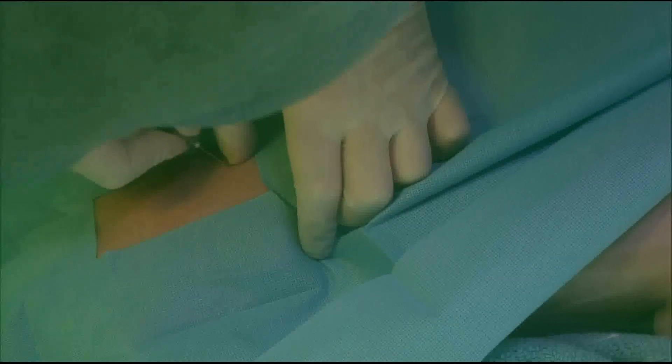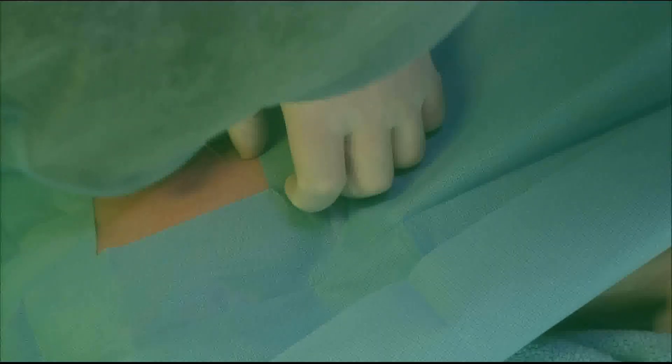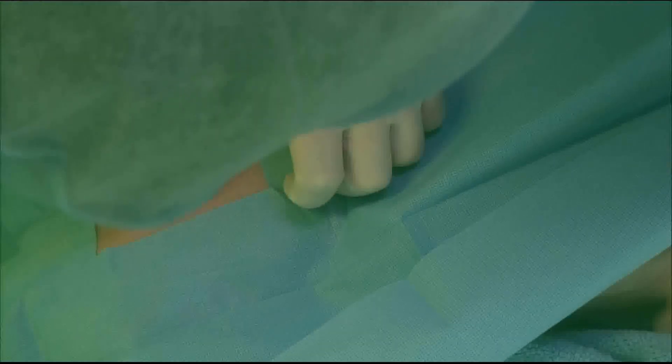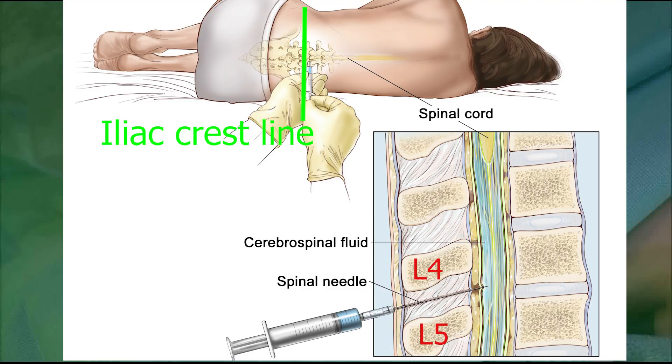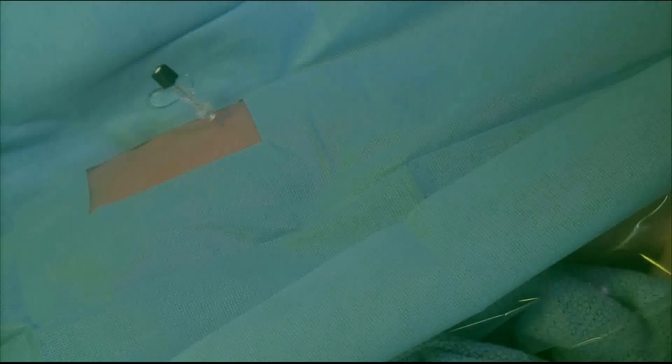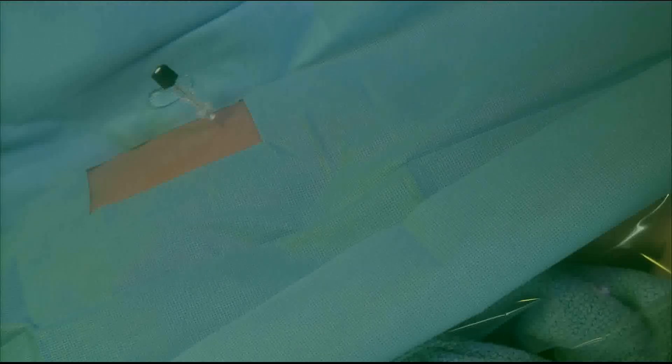Once you have identified the correct space, make sure your needle is not hitting bone and continue to advance. Make sure the stylet is inside the needle, and once you feel that the soft tissues have given way, remove the stylet and check for CSF backflow. You can clearly see the CSF backflow here, which means you have successfully entered the intrathecal space and are ready to inject your intrathecal baclofen.